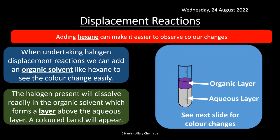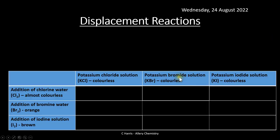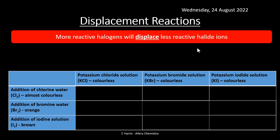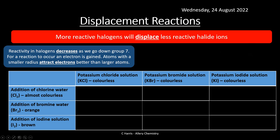In displacement reactions, more reactive halogens will displace less reactive halide ions. Adding hexane makes the color changes more pronounced. The reactivity of halogens decreases as we go down group 7. For a reaction to occur, an electron is gained — atoms with a smaller atomic radius attract electrons much more readily than larger ones.